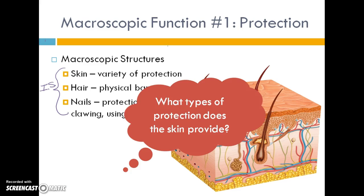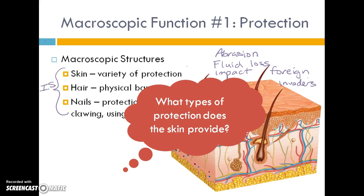The skin's layers offer protection from abrasion and everyday wear and tear. Some parts of your body have thicker layers of skin based on where they are and how they're used, like the palms of your hands and your feet. The skin also protects against fluid loss, especially important for organisms living on land, cushions against impact, and protects against foreign invaders.